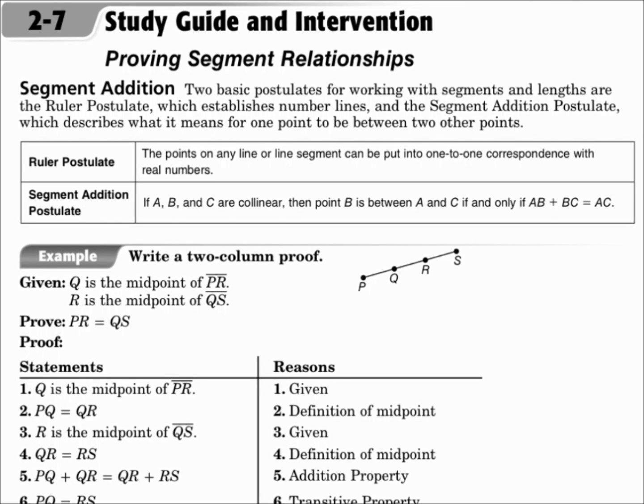The segment addition postulate says that if A, B, and C are collinear, then point B is between A and C if and only if AB plus BC equals AC, which is really stating what we've said several times already. In a segment, one part plus another part equals the whole thing. The parts add up to the whole thing.